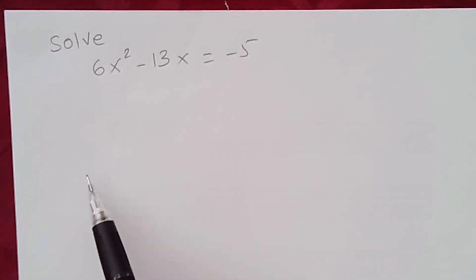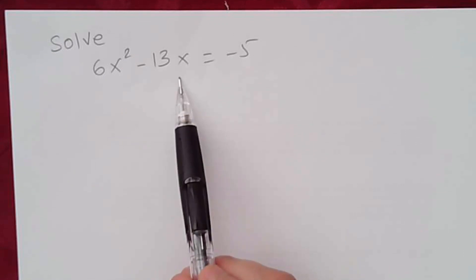Hello, everybody. Today, we're going to solve the quadratic equation 6x squared minus 13x equal to negative 5.